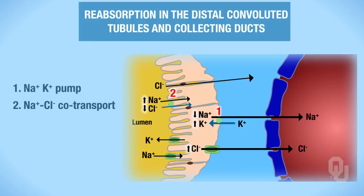Then we have another way to transport sodium, and that's number three. Sodium's going from a high concentration through this channel toward its lower concentration. So because it's going through a channel here, we know that this must be facilitated diffusion.